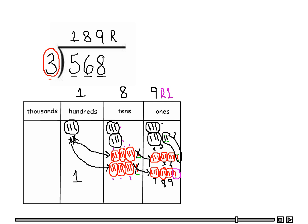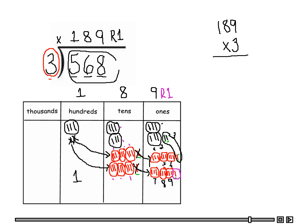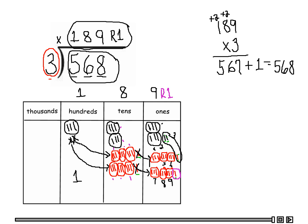Can't forget the remainder of one. Now let's check and see if this is correct. To check this, I'm going to use multiplication — I'm going to take my divisor and multiply it with my quotient. So we have 189 times three, and we want to see if that equals my dividend. Three times nine is 27 — carry two over to the tens place. Three times eight is 24, plus two is 26 — carry the two over to the hundreds place. Three times one is three, plus two is five. We can't forget about our remainder of one, so we need to add one to this, and it's going to equal 568, which is my dividend. So this is correct. The answer is 189 with a remainder of one.